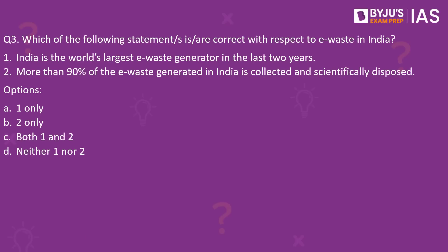Based on the global e-waste monitor report, India is the third largest e-waste generator behind China and the US. Coming back to the question — both statements are wrong. India is not the world's largest but the third largest. Also, it is not more than 90% — it is around 10% that is collected and scientifically disposed. Since the question asks for the correct statements, the answer to this question would be option D — neither 1 nor 2.